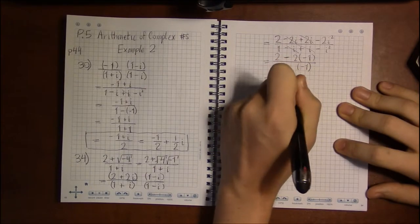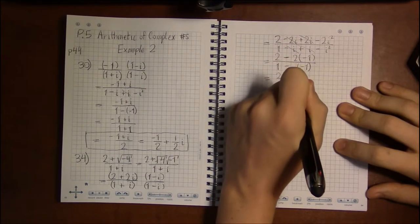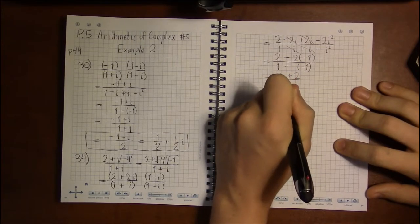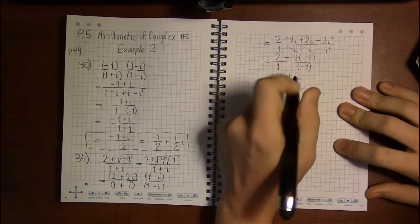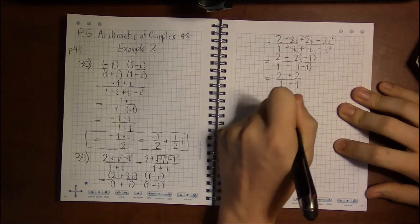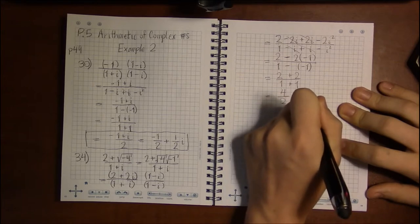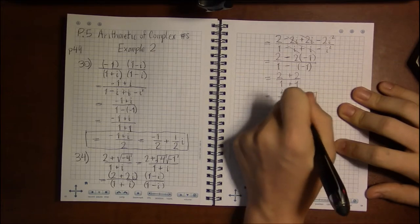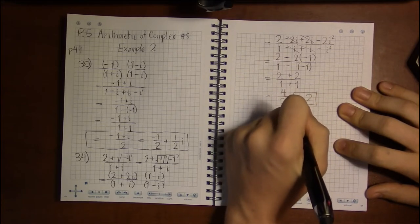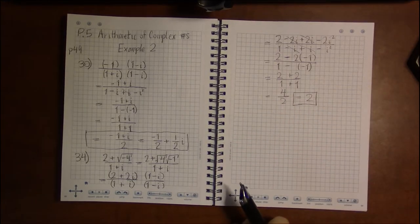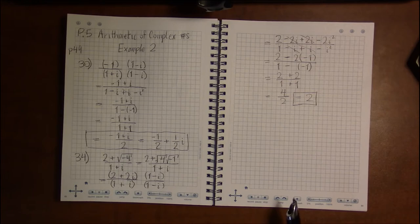2 minus 2 times a minus 1 is a plus 2. Minus a minus 1 is plus 1. That's 4 over 2, which is 2. And that is all there is to it.